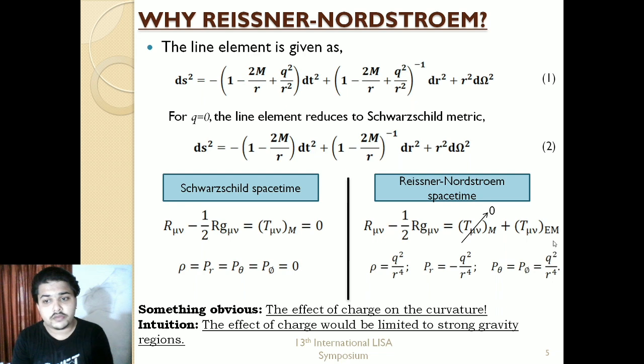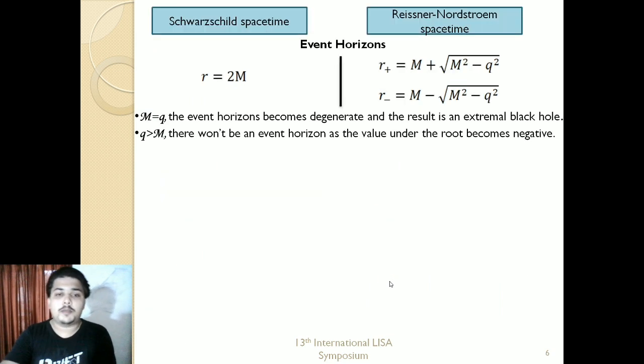Since these are vacuum solutions, the energy momentum tensor because of the mass is going to be zero, but for the RN case, because of the presence of the charge term, there is an additional component: the electromagnetic energy momentum tensor. The components can be calculated as: density equals Q squared by R to the power 4, radial pressure is minus Q squared by R to the power 4, and angular pressures are Q squared divided by R to the power 4. The intuition I have is that the effect of this charge is going to be limited to strong gravitational field regions and will diminish as R increases.